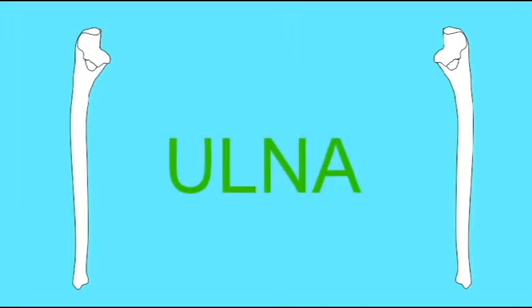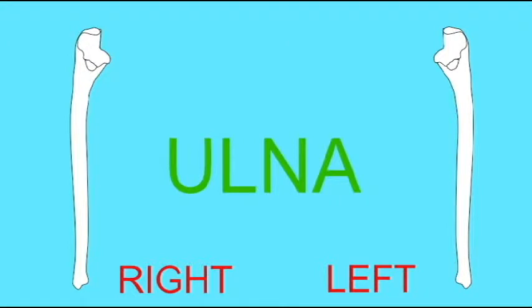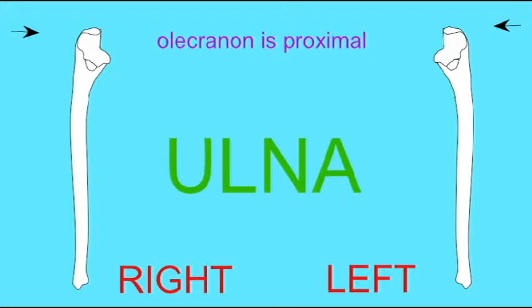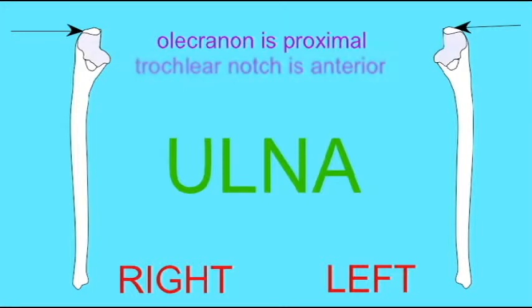Before you can easily identify structures on the ulna, you must be able to distinguish between the right and left ulna. The olecranon, that knob which makes up our elbow, obviously faces proximally — we can feel this. The trochlear notch faces anteriorly. This is obvious since if it faced posteriorly, you would be able to feel this notch with your fingers. Obviously, it doesn't.